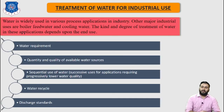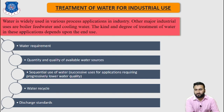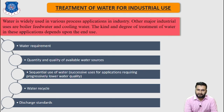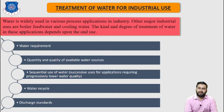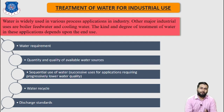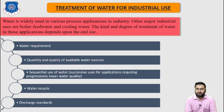Now let's discuss the treatment of water for industrial use. Water is widely used in various process applications in industry. Other major industrial uses are boiler feed water and cooling water. The kind and degree of treatment depends upon the end use of that water. For example, cooling water may require only minimal treatment, while removal of corrosive substances and scale-forming solutes is essential for boiler feed water.